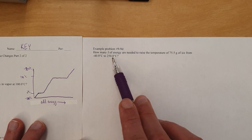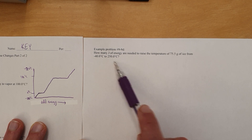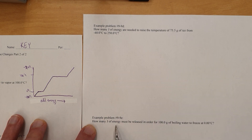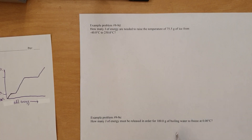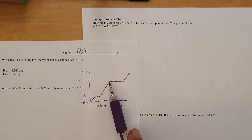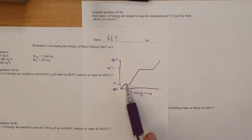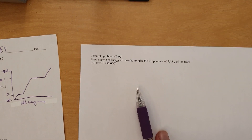Heating it from negative 40 — where it's frozen — to positive 250, where it is a gas. For the last question, 100 grams of boiling water at 100 degrees cooling down to freeze at 0 degrees Celsius means calculating the energy for two steps and adding them together. For the big granddaddy: warm the ice from negative 40 to 0, then melt it, warm the water to 100, vaporize it at 100, then warm the vapor from 100 to 250. Add all five calculations together for the answer in joules.